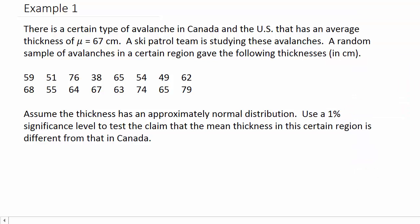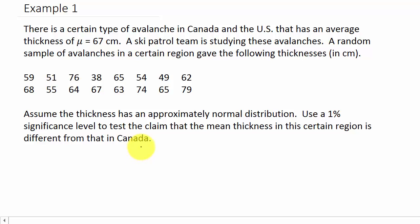In this example, a certain type of avalanche in Canada and the US has an average thickness of μ = 67 centimeters. A ski patrol team studied avalanches in a certain region and collected a random sample of thickness measurements in centimeters. We assume thickness has an approximately normal distribution. We use a 1% significance level, so alpha = 0.01, to test the claim that the mean thickness in this region is different from that in Canada.